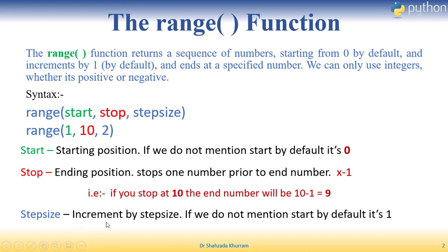Step size controls the increment. If we want to go up to 10 with steps of 2, we get 1, 3, 5, 7, 9. If we start from zero with step 2, we get 0, 2, 4, 6. Step size can also be 3 or 4 — the sequence increments by that amount each time. If we don't mention step, by default it is 1.